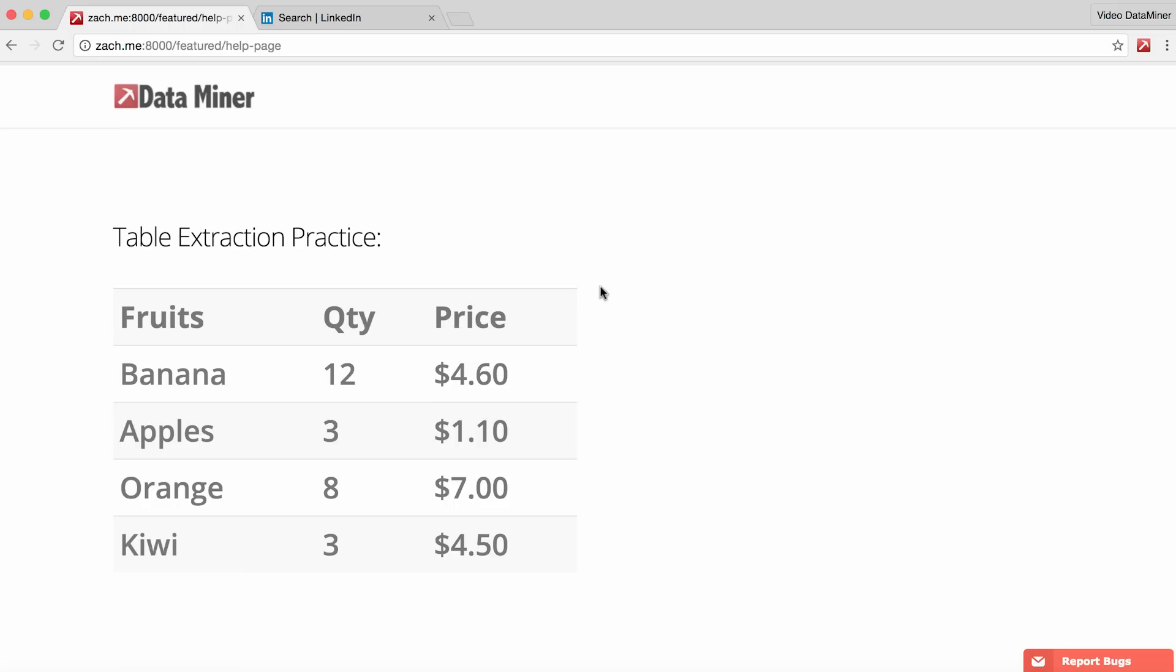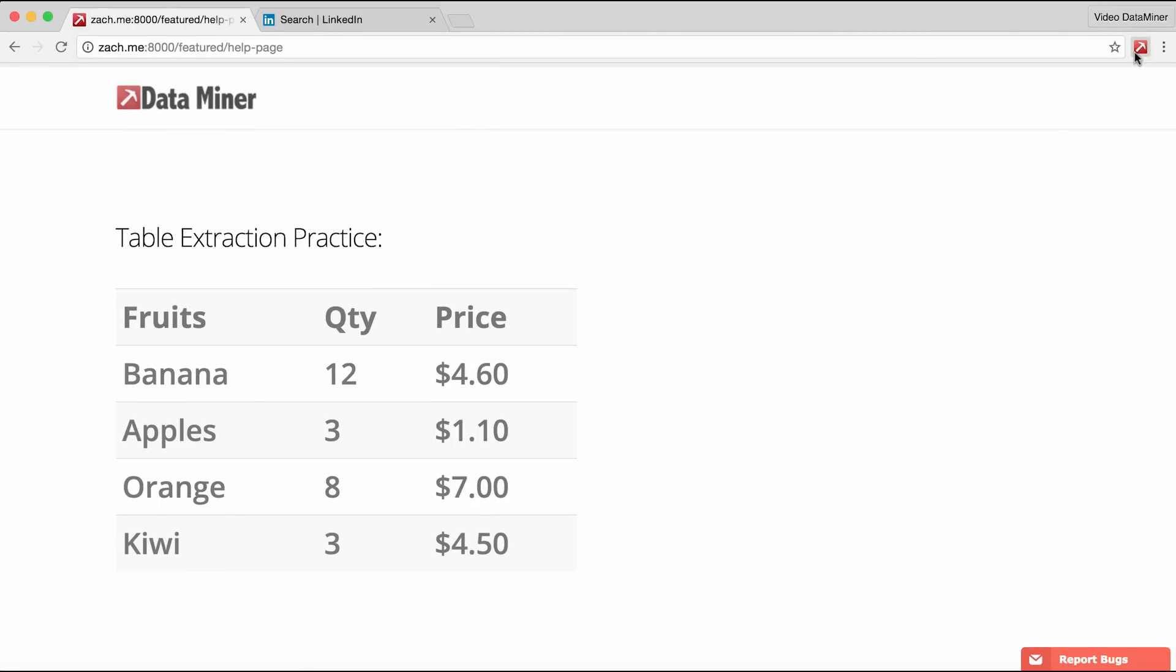As you can see, I'm on a page that has a table with a few rows and columns, and this is the information I would like to capture. So, just simply click on the Dataminr icon that's in the top right corner of your toolbar.